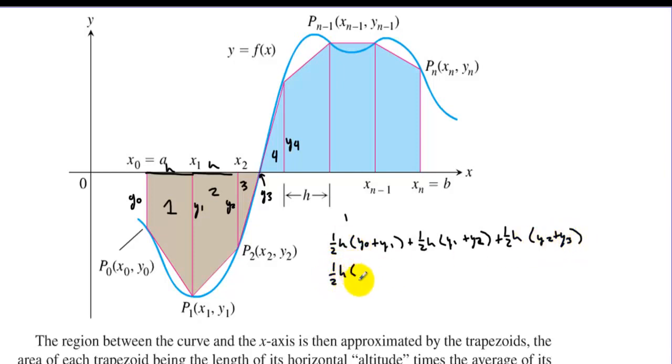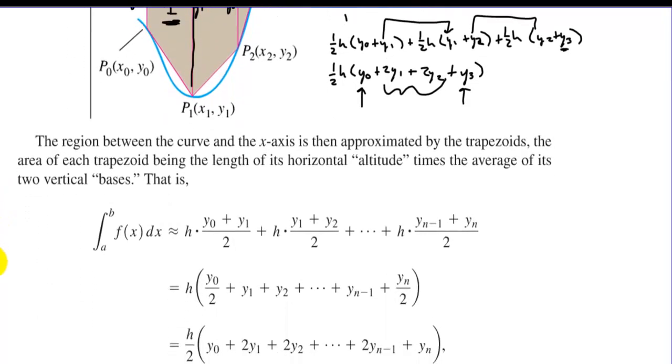When we factor out a 1 half h, we end up with y sub 0 plus 2 y sub 1's. Notice how we'd have a y sub 1 here and another one here. So we'd have 2 y sub 1 and then plus, we would have 2 y sub 2's. But for the last one, we'd just have 1 y sub 3. So we'd have 1 of the first y's and 1 of the last y's. But in the middle, we're going to use the middle sides twice. We would use this side once for the trapezoid 1 and then once for the second trapezoid. Then we'd use y2 for the second trapezoid and the third trapezoid. So the ones in the middle, we're going to use twice. The one on the ends, we only use once.